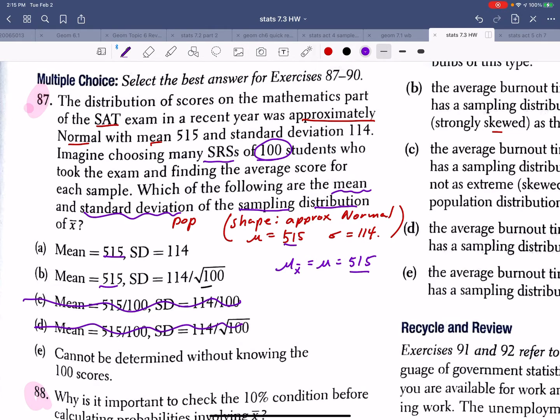And what would be the standard deviation? Well, we established that the standard deviation of my sampling distribution would be my standard deviation divided by the square root of n. So that would be 114 divided by the square root of 100. Because my sample size is 100 and I didn't even have to put it in the calculator. There's my answer B. Nice.